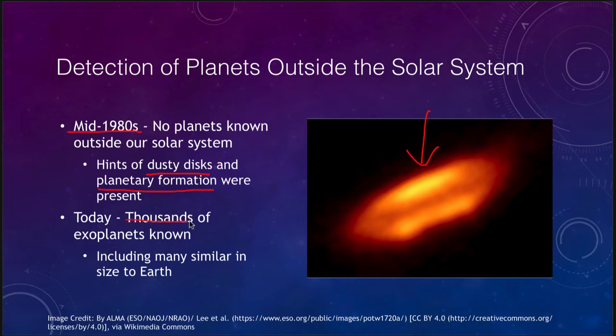Today, we know thousands of exoplanets, thousands of planets outside our solar system, which includes large planets much larger than Jupiter, and includes planets down to and including the size similar to that of the Earth.